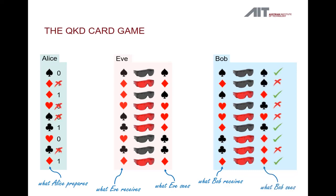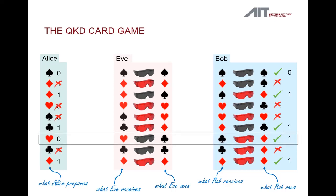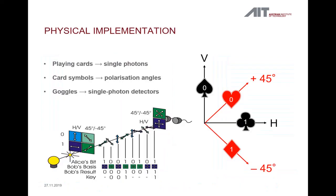Afterwards, Alice and Bob will again compare the colors and omit the cards where Bob used the wrong color. But this time something is different — Alice and Bob find they have symbols that do not match, even though Bob used the proper goggles. Thanks to the special properties of quantum cards, an interception of the card deck will inevitably produce a certain error rate that Alice and Bob can determine by statistical comparison. If they find the error rate to be lower than a certain threshold, they can be absolutely sure that nobody else has any information about their key. This is an example of how we implement this card game in the real world, but that is material for another video.